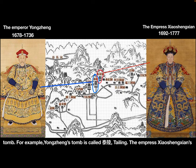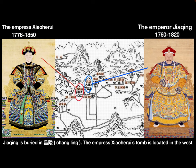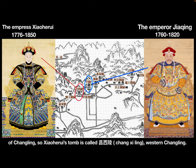For example, Yongzheng's tomb is called Tai Lin. The Empress Xiao Shen's tomb is located to the east of Tai Lin, so her tomb is called Tai Dong Lin — eastern Tai Lin. Jiaqing is buried in Chang Lin. The Empress Xiao He's tomb is located to the west of Chang Lin, so her tomb is called Chang Xi Lin — western Chang Lin.